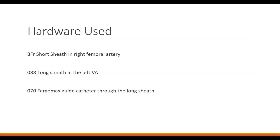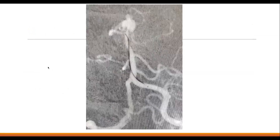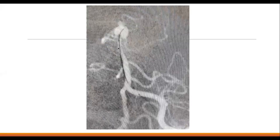We selected a 9 mm contour device for our 5 mm neck, 6 mm width aneurysm, delivered through a 0.017 microcatheter. Hardware: right femoral puncture with an 8 French short sheath; long sheath in the left vertebral artery; Fargo Max 070 guide catheter through the long sheath. The Echelon 10 microcatheter was tracked for coiling through the left vertebral artery into the basilar aneurysm. A second microcatheter — the Neuroslider 21 — was used to deliver the contour device. Both microcatheters were positioned in the aneurysm simultaneously.